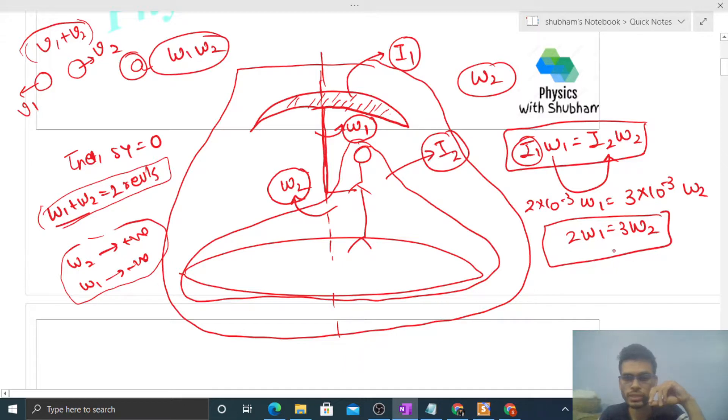Now we have 2 equations and 2 variables. So yaha se dekho, omega 1 is 3 by 2 of omega 2. Now you can put the value of omega 1, that is 3 by 2 of omega 2 plus omega 2, that is 2. So 5 upon 2 of omega 2 is 2, so omega 2 is nothing but 0.8 revolutions per second.